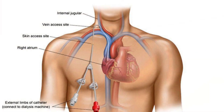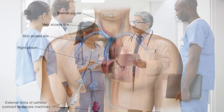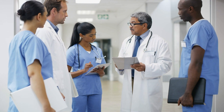Central lines are large tubes that are inserted into a vein in the neck, chest, or groin. They are used to deliver fluids, medications, and nutrients to patients who cannot take these things by mouth.